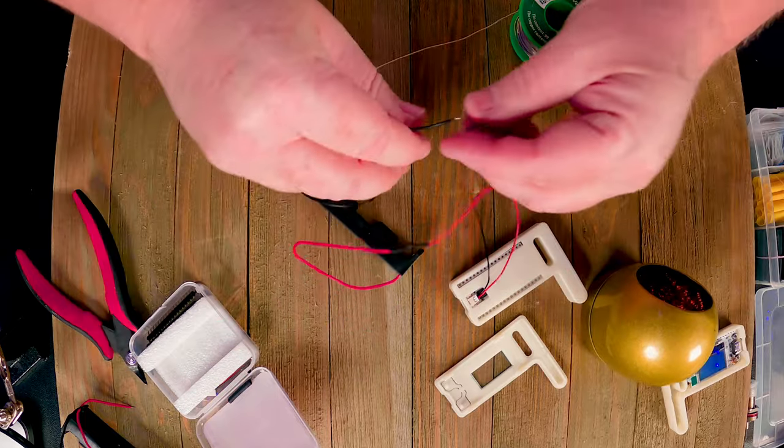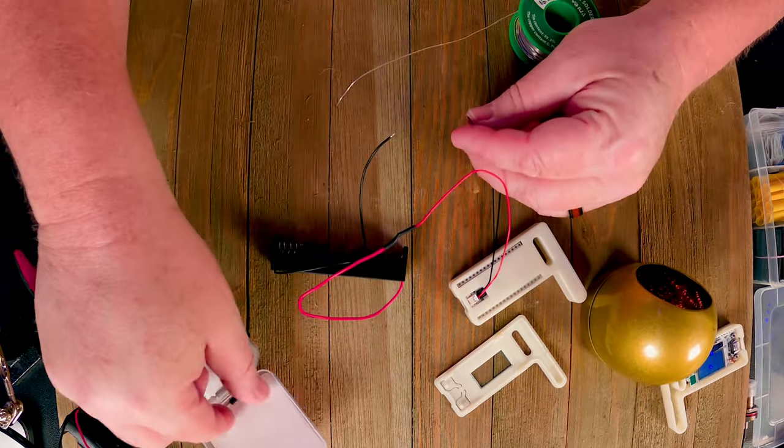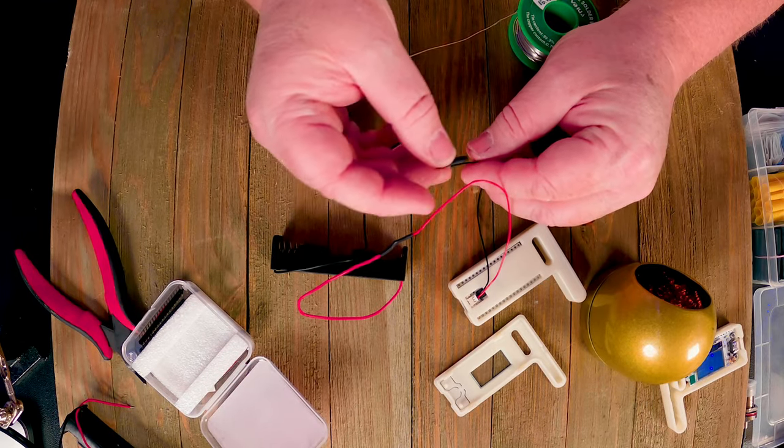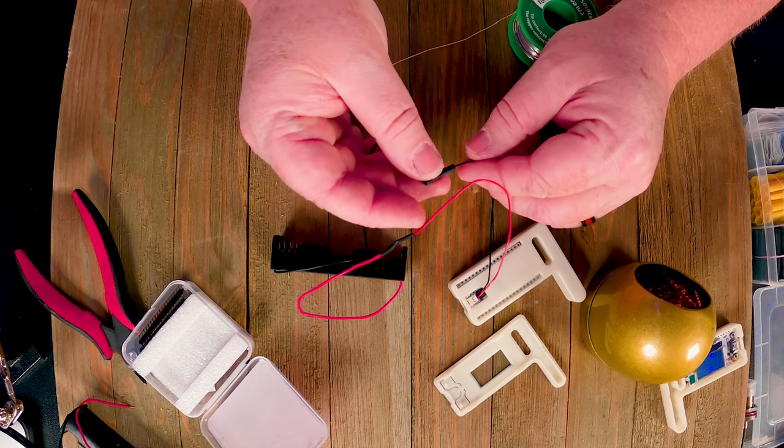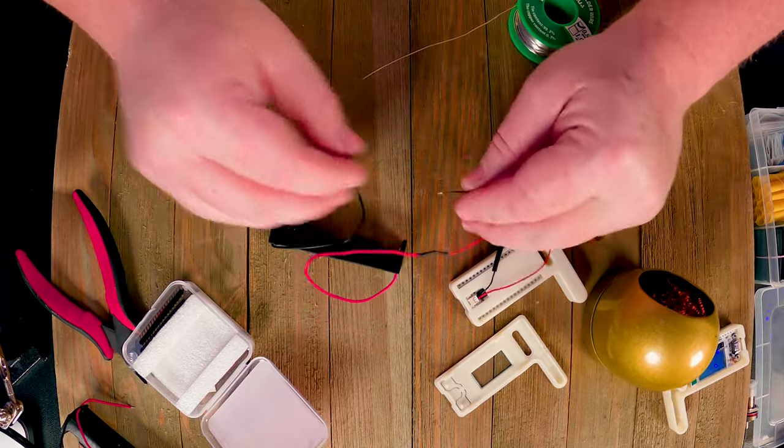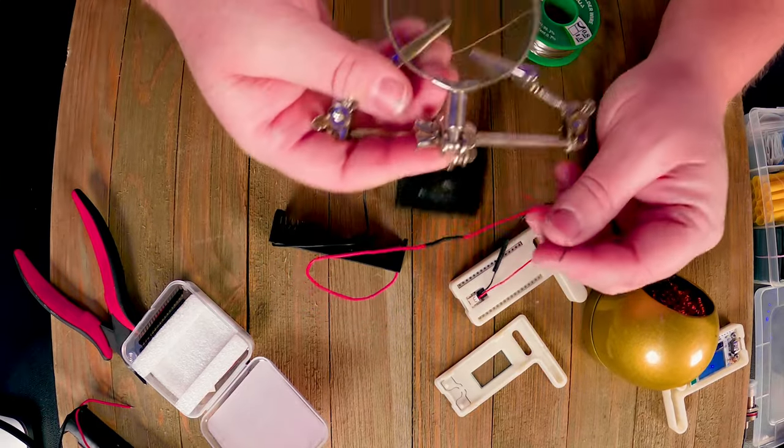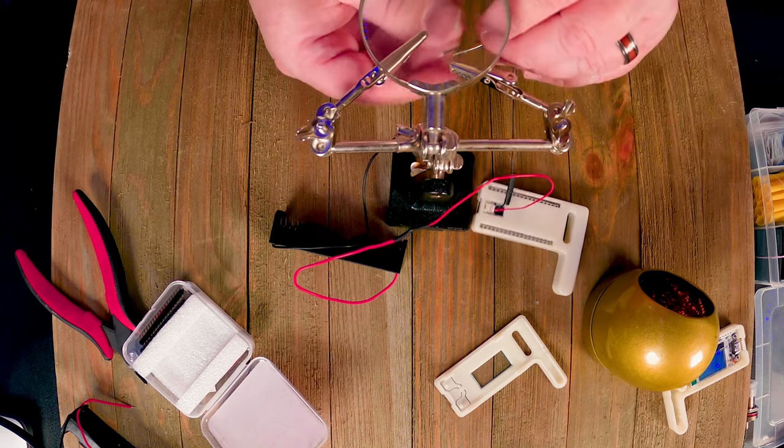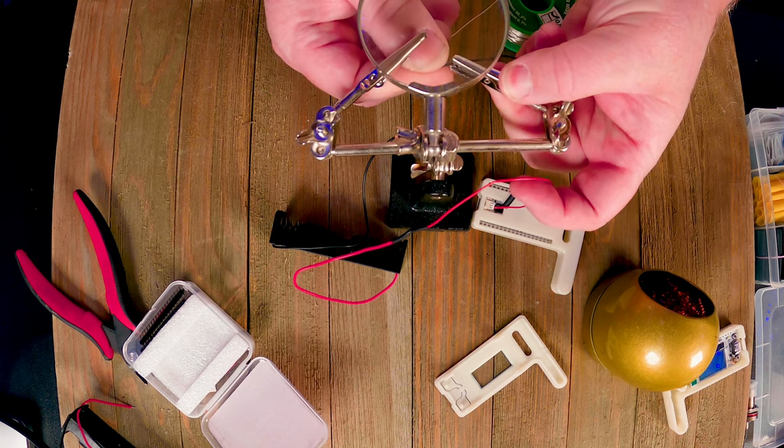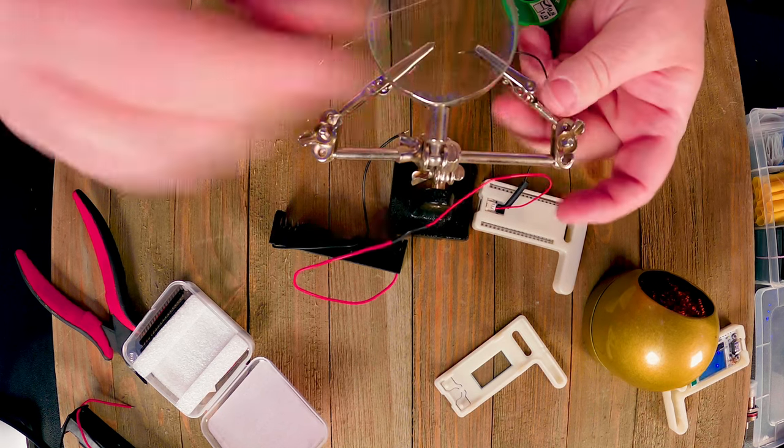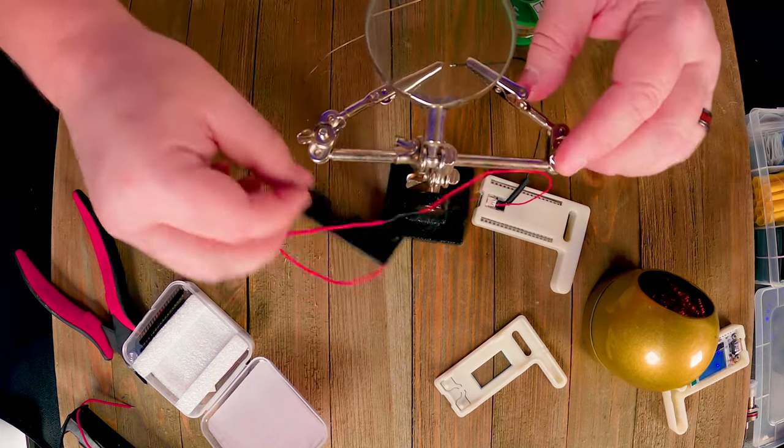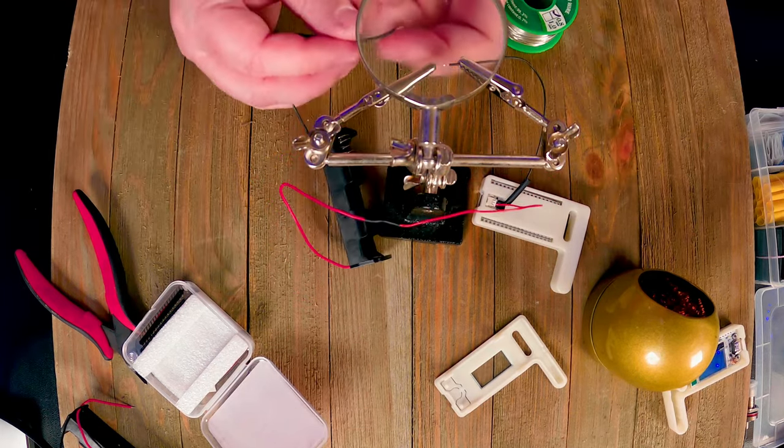It'll shut off in a second. Now I'm going to do the negative wire the same way. I'm going to go ahead and slip the heat shrink over. Don't forget to do that. Studio lighting is not the best lighting for this kind of work. Struggling to see it all.